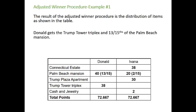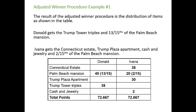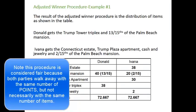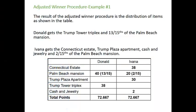The result of the adjusted winner procedure: Donald gets the Trump Tower triplex and 13/15 of the Palm Beach mansion. Ivana gets the Connecticut estate, the Trump Plaza apartment, the cash and jewelry, and 2/15 of the Palm Beach mansion. In a case where we're sharing an item, that probably means monetary value — they would figure out the actual cost of the mansion, and Donald would either keep it entirely and pay Ivana 2/15 of its value, or they could split the monetary value. It's also possible, if it's a vacation home, to literally split up how many weeks per year each party receives.